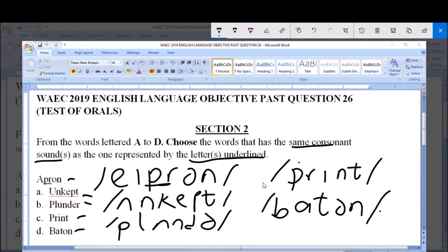Now you can see that option C, print contains this consonant sound, the same consonant sound as you have in apron. So the correct answer is C, print.